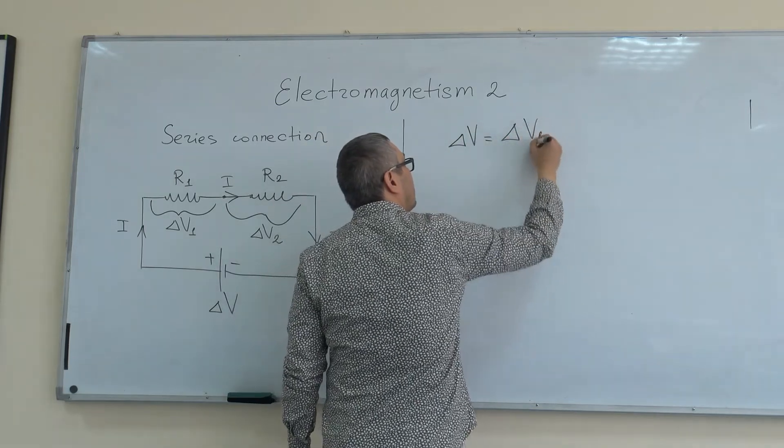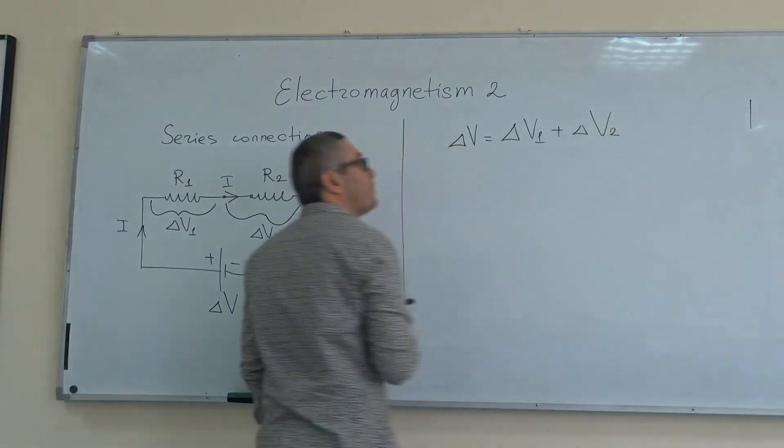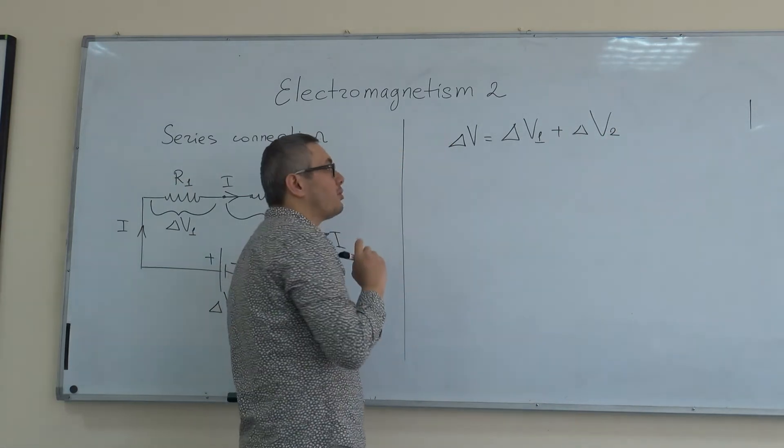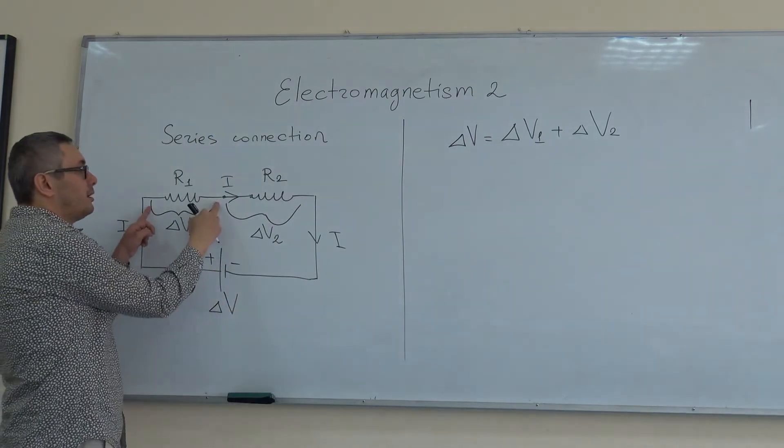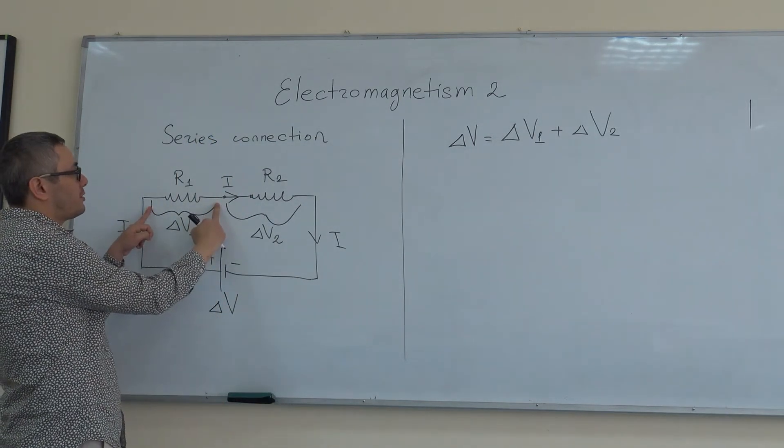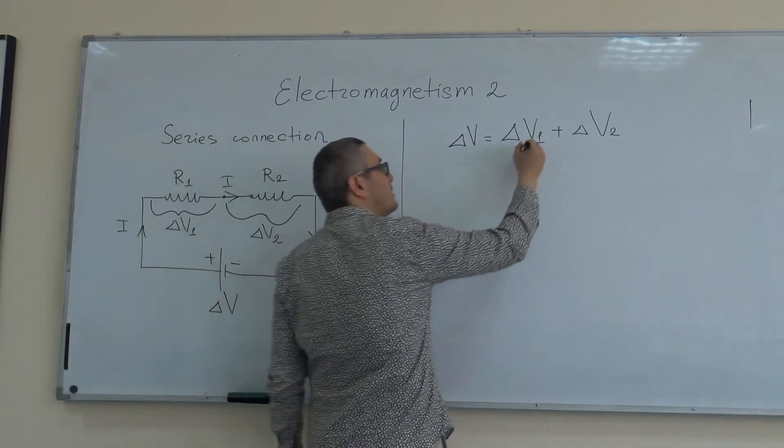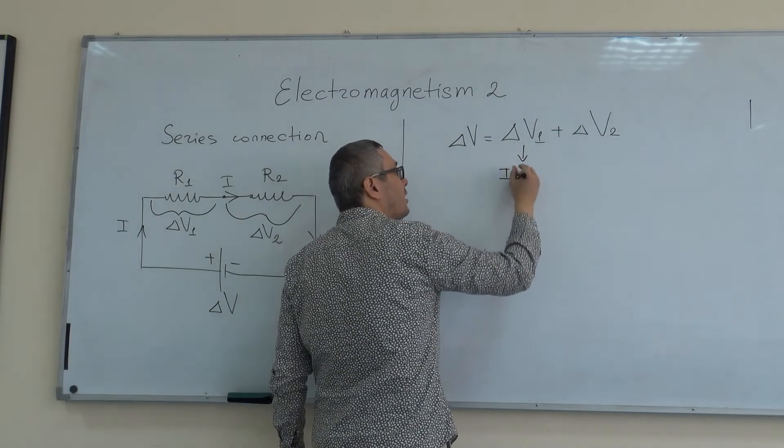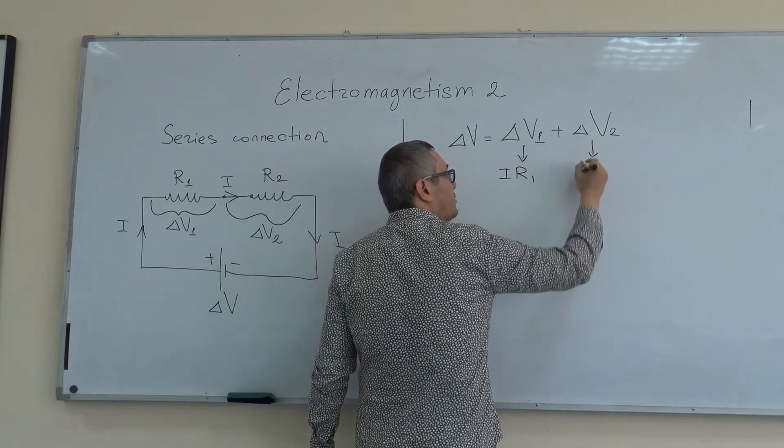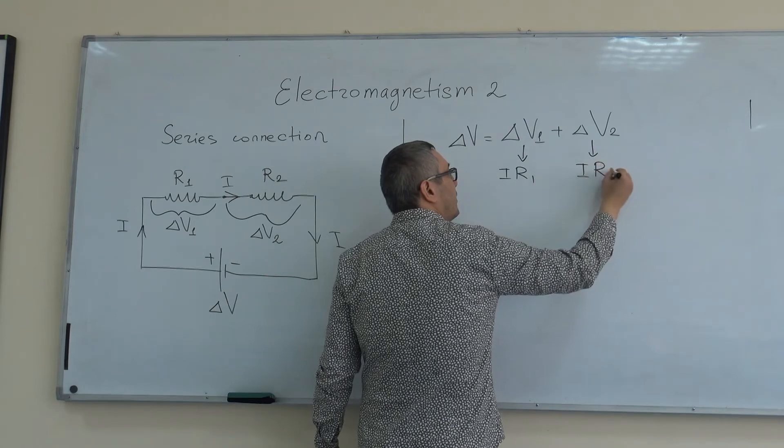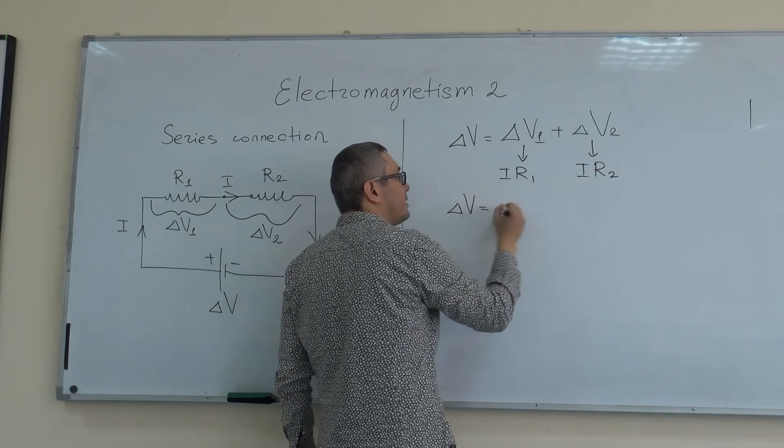From Ohm's law, we know that Delta V1, the voltage drop across the first resistor, is equal to I times R1. Delta V2 is equal to I times R2. So I can now say that Delta V is equal to I times (R1 plus R2).